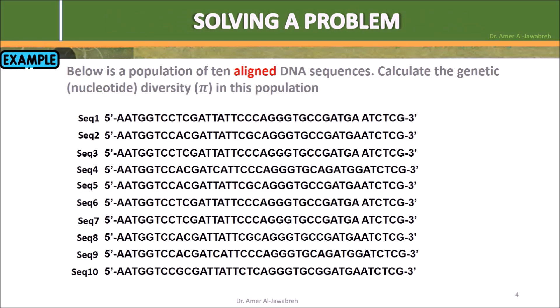Solving a problem. Example: below is a population of 10 aligned DNA sequences. Calculate the genetic or nucleotide diversity pi in this population.